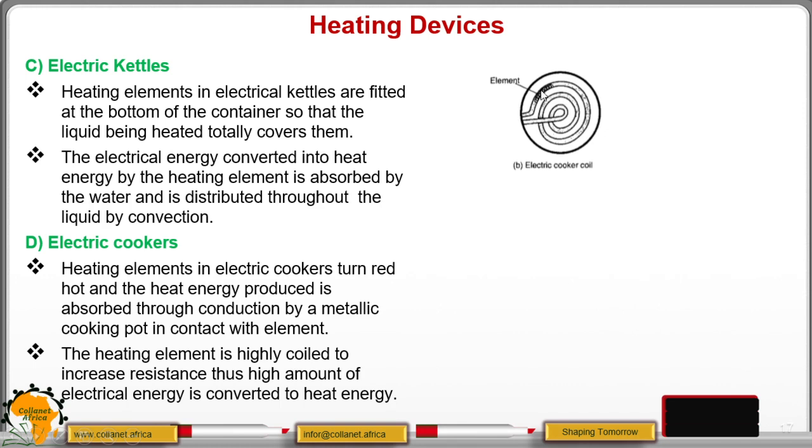And then this coil absorbs that heat energy. So, this coil will become red hot. And now, when you put your material there, you will find that you can cook using your coil.